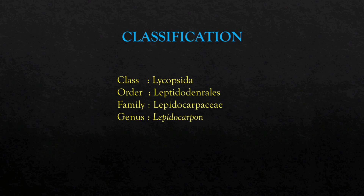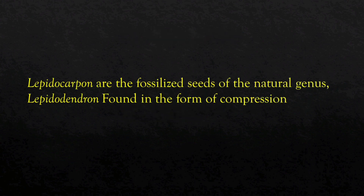Class Lycopseida, order Leptodentriles, family Leptocarpaceae, genus Leptocarpon. Leptocarpon are the phosphatite seeds of natural genus Leptodendron, found in the form of compression.